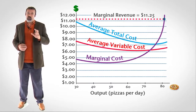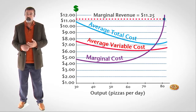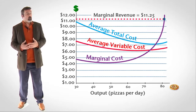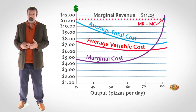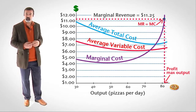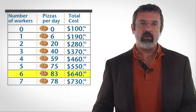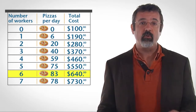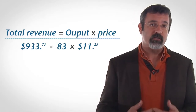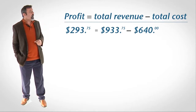The output level at which marginal revenue and marginal cost are equal is 83 pizzas per day. Putting the information on a graph gives us a picture like this. Notice the point at which MR equals MC — drop down from there to the horizontal axis to find the profit-maximizing output level. When the pizzeria produces 83 pizzas per day, its total cost is $640 per day and its total revenue is $933.75 per day, so its economic profit is $293.75 per day.